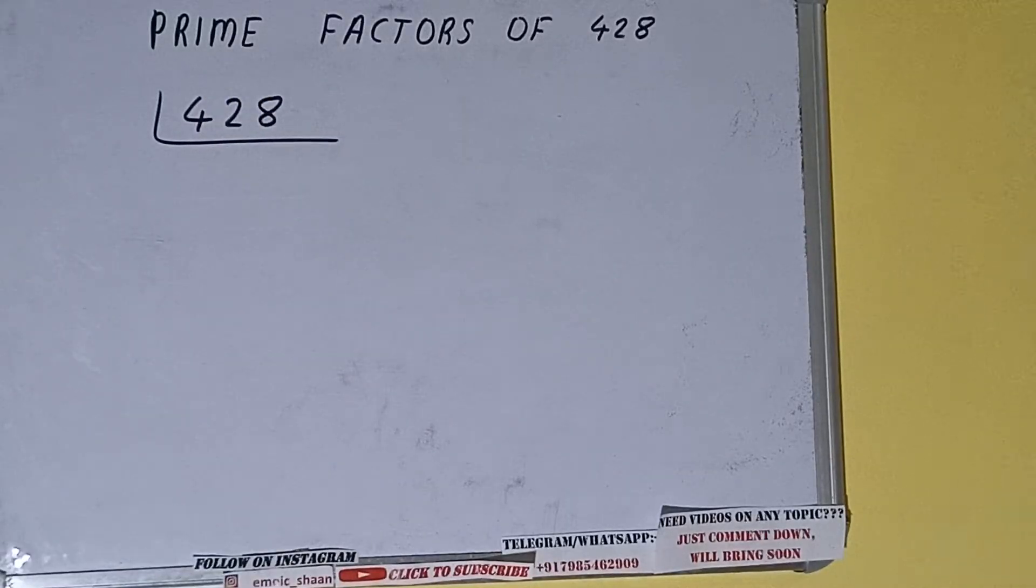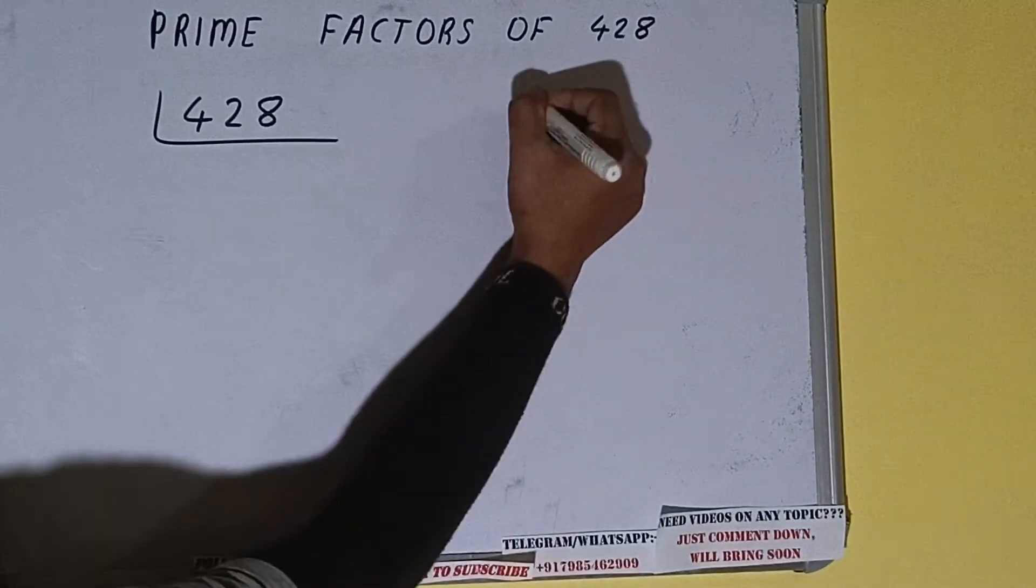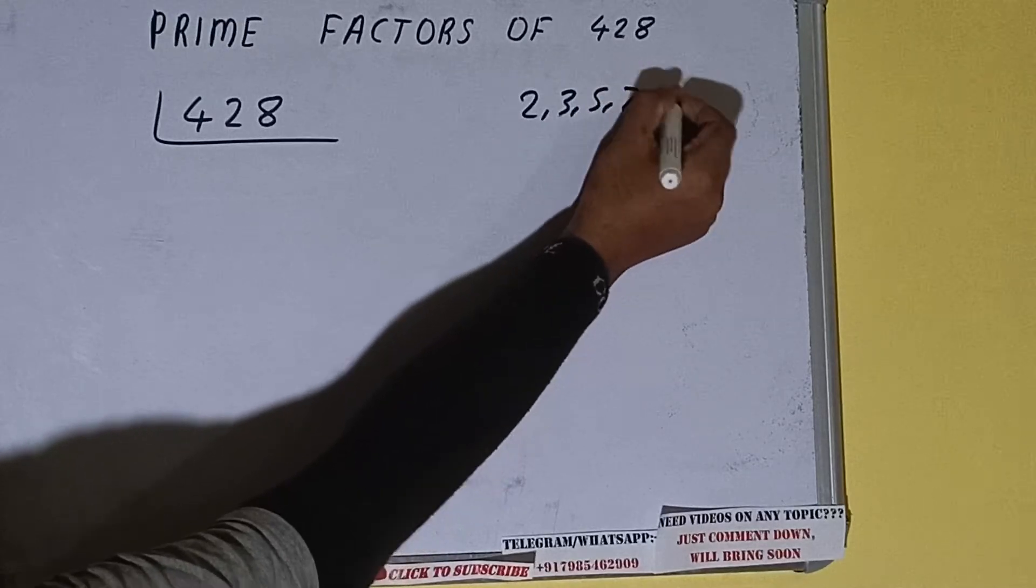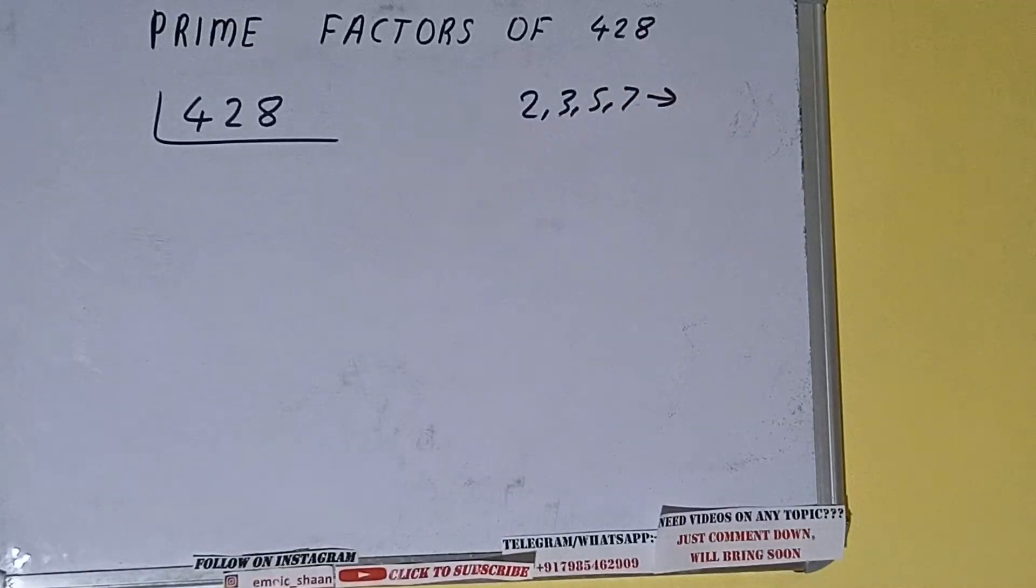The next thing we need to know about is what are prime numbers. Prime numbers are numbers that are divisible by 1 and the number itself, like 2, 3, 5, 7, and so on.